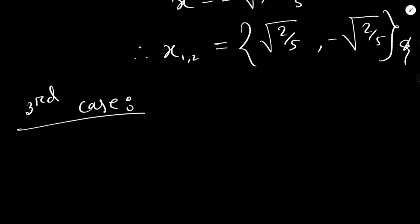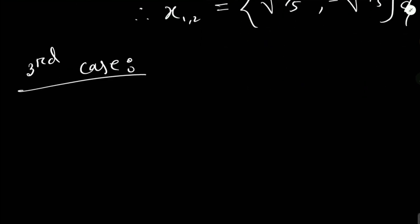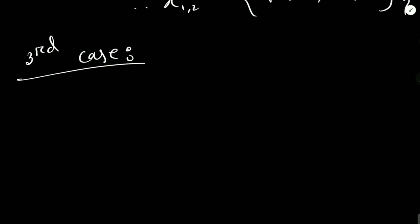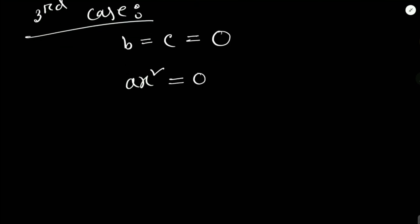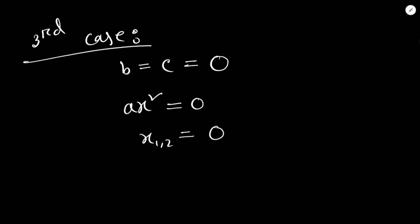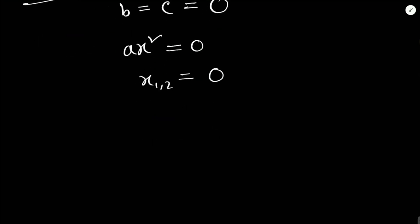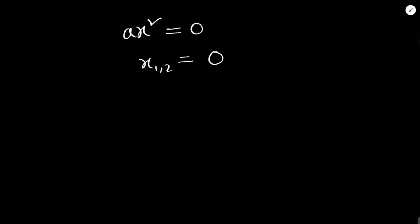Third case: if both b and c equal zero. In this case the equation has only one solution: x1, x2 = 0. These cover all the special cases of quadratic equations, but we also want to discuss the first-degree equation further.